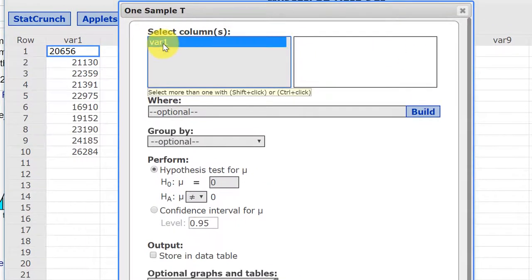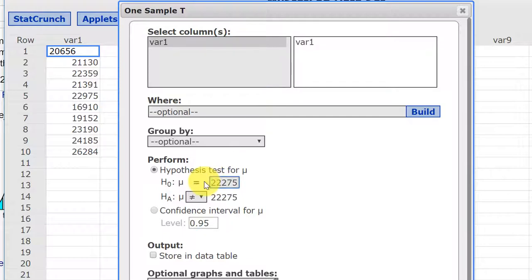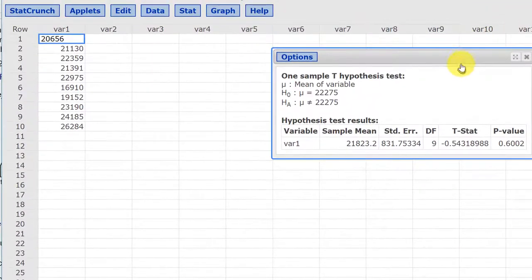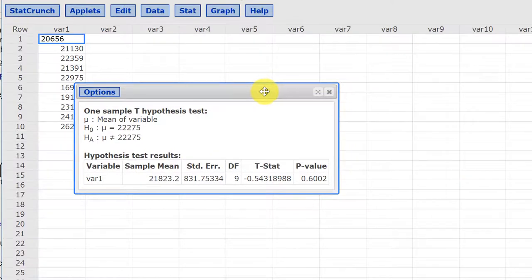We need to select the column that has our data, which is variable one, and we're going to perform hypothesis tests. I think our null value is 22,275. That's what we assume. It's a two-tailed test with not equal in the alternative, so we're just going to click Compute. And we bring up our answer box here.